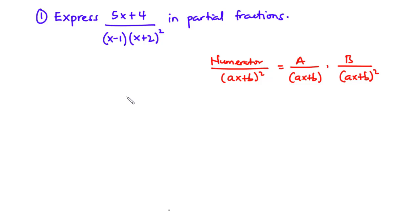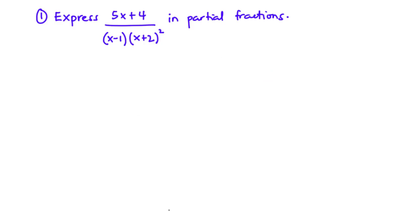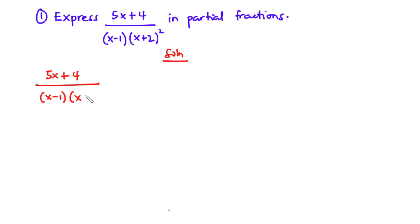Now let's consider this question. How do we express this rational function into partial fractions? We have the rational function 5x plus 4 divided by x minus 1 times x plus 2 all squared. Looking at the denominator, we have a linear factor and a repeated factor. The linear factor has a partial fraction of A over x minus 1, and the repeated factor has two partial fractions.